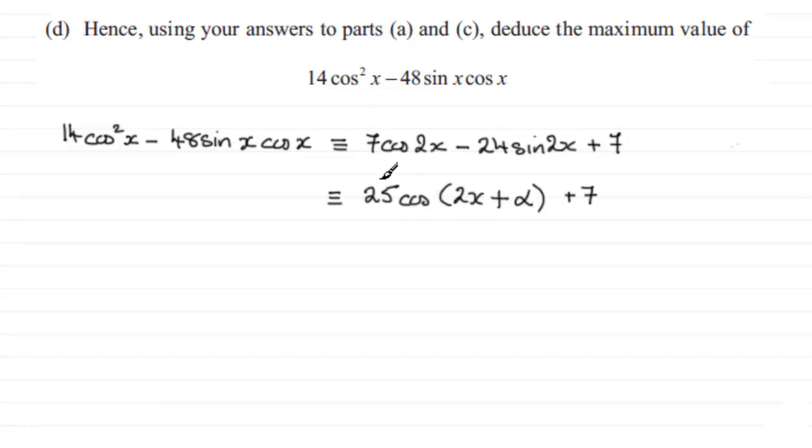So therefore maximum value equals 32, alright, when cos of 2x plus alpha turns out to be 1.